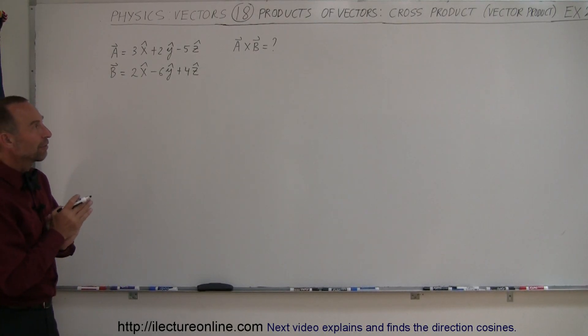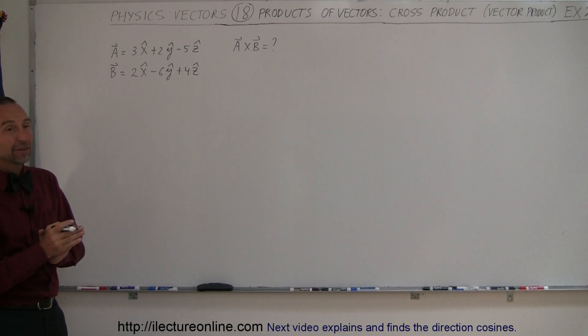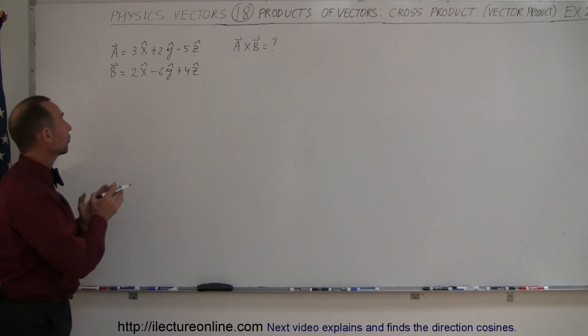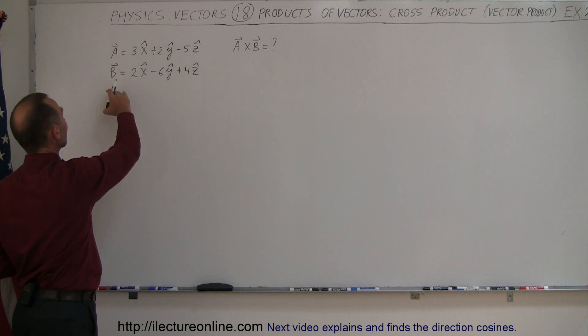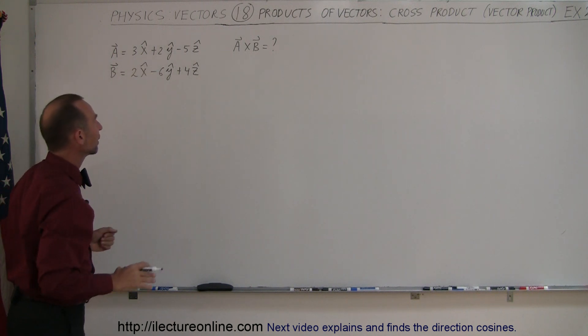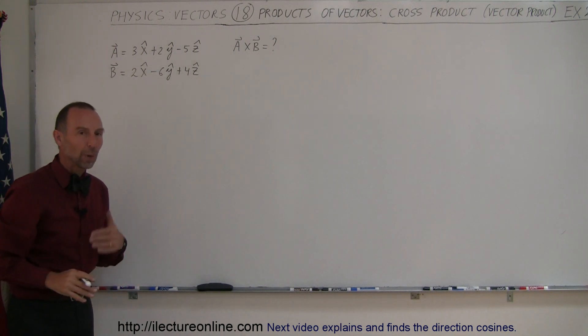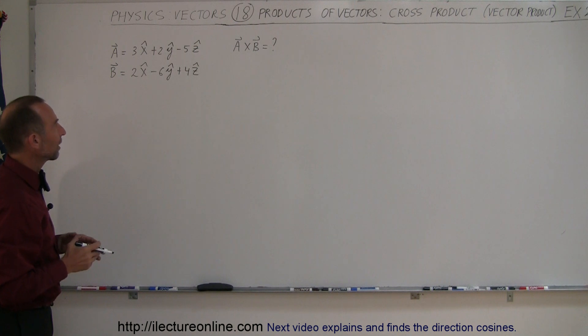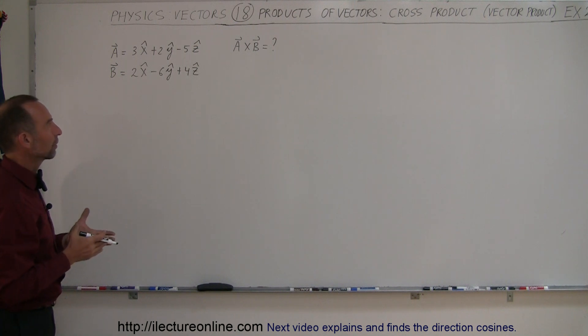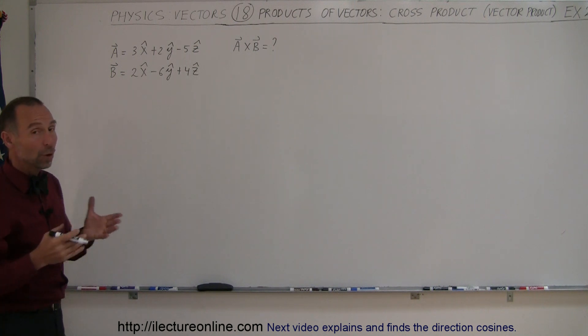In this example of how to find a cross product, I just came up with two vectors. We have the A vector and the B vector — they have three components: X, Y, and Z. And we're going to find the cross product of these two.